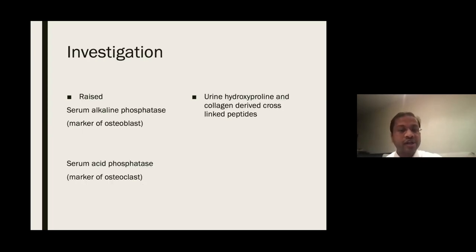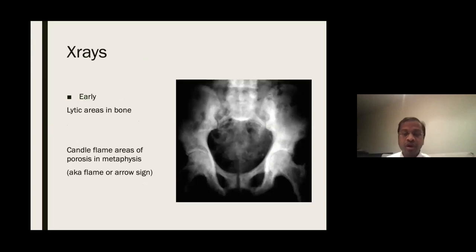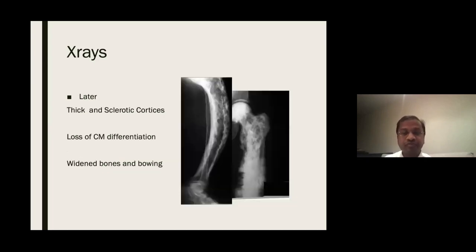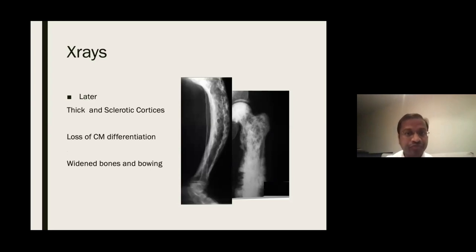Investigation-wise, blood parameters for Paget's include raised serum alkaline phosphatase — a marker of osteoblast activity — and acid phosphatase, a marker of osteoclast activity, plus urine parameters. Radiologically, early disease shows lytic phases in bone with the classical candle-flame or arrow sign at the metaphysis. Later, in the burnt-out phase, you have thick sclerotic cortices, loss of corticomedullary differentiation, widened bones, and bowing of long bones.